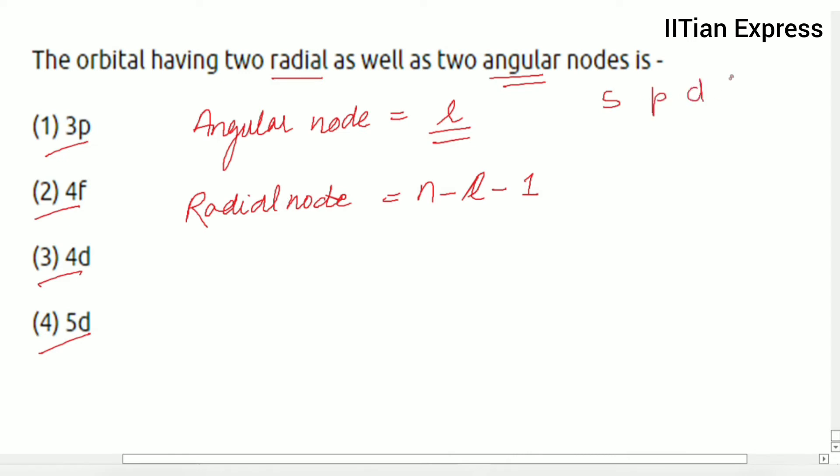So the orbital must be d orbital and n must be like what? If we are considering option 3, then we are putting the value of n, that is 4 minus 2 minus 1, it is going to be 1. And here it is saying 2.